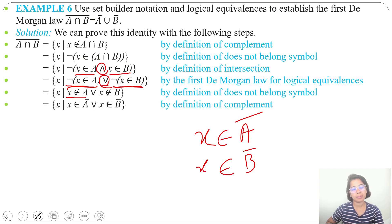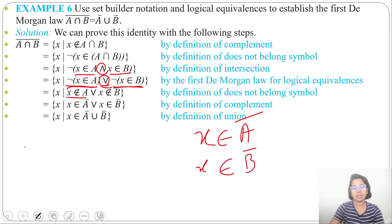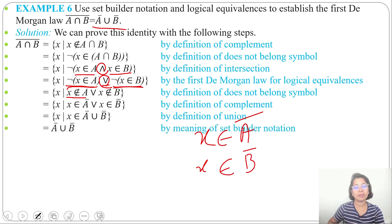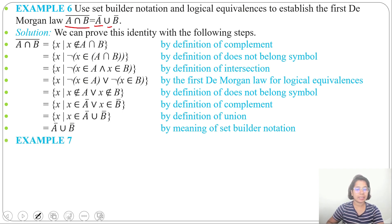Then x does not belong to A means x ∈ A', and x does not belong to B means x ∈ B'. So x ∈ A' OR x ∈ B', which by definition of union means x ∈ A' ∪ B'. Hence we proved the De Morgan's law: (A ∩ B)' = A' ∪ B'.